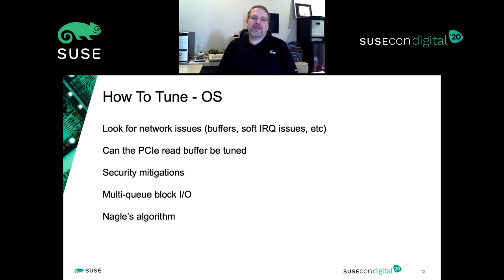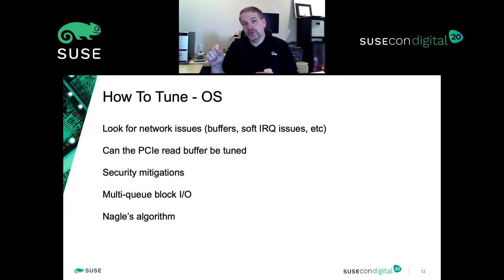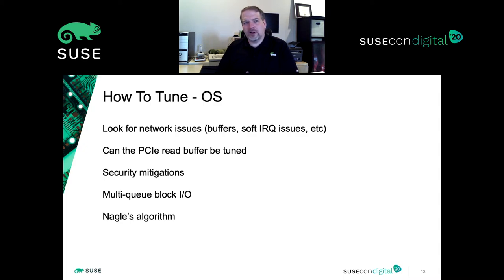For storage OS tuning, if you're using NVMe or caching RAID controllers, enabling multi-queue block IO is a huge win. It allows IO scaling across multiple CPU queues rather than a single core, so IO scales much more gracefully. On the network side, Nagle's algorithm can have a detrimental effect — in storage we almost always turn it off because it impacts the system's ability to drive IO.